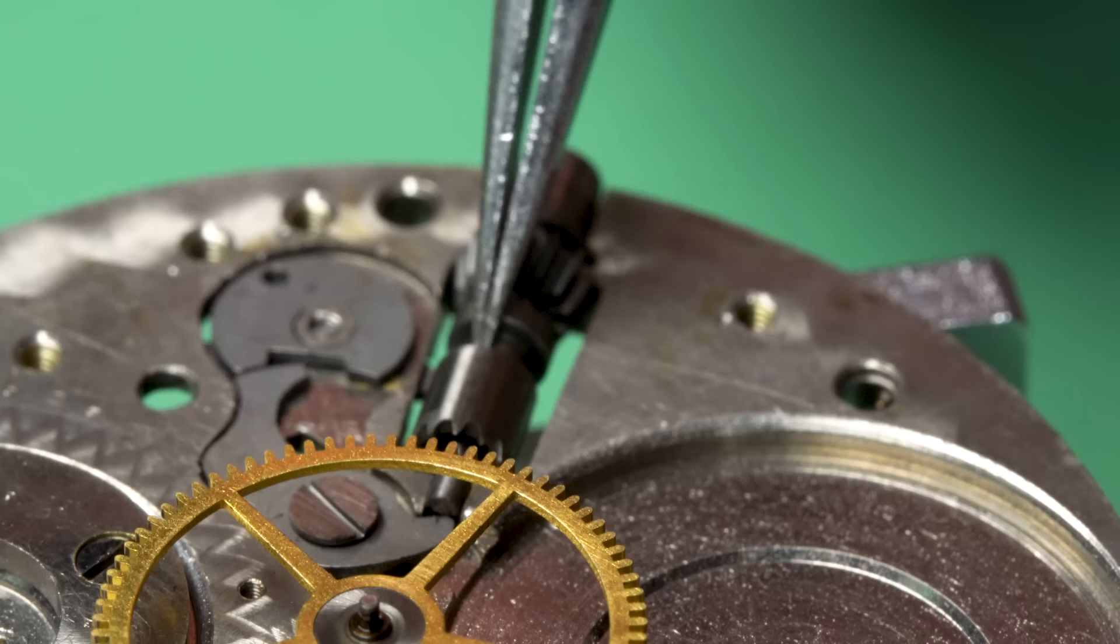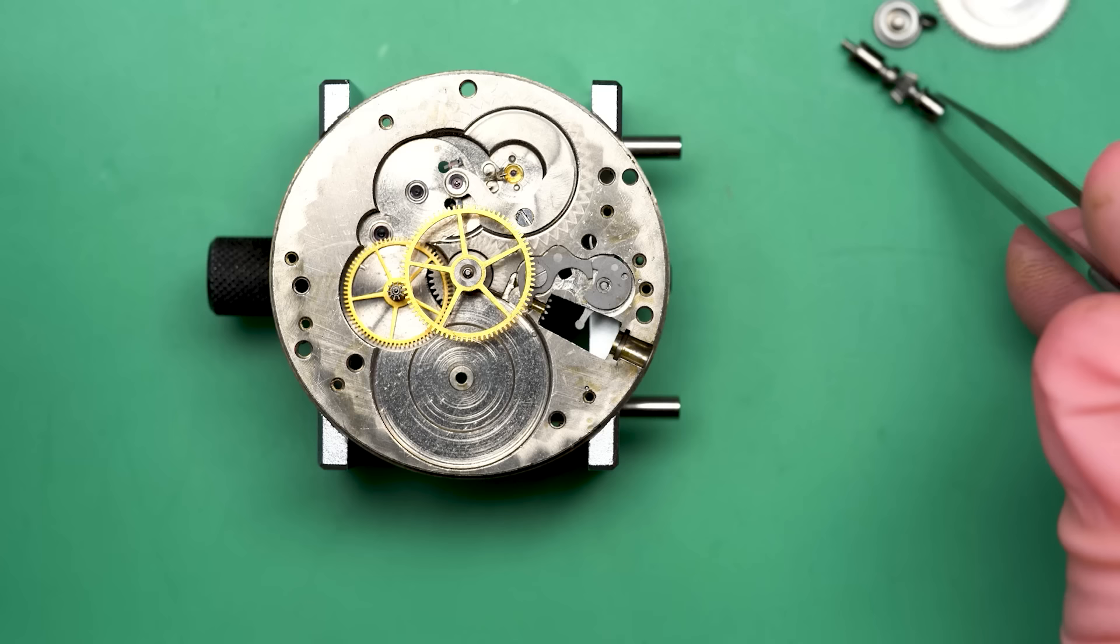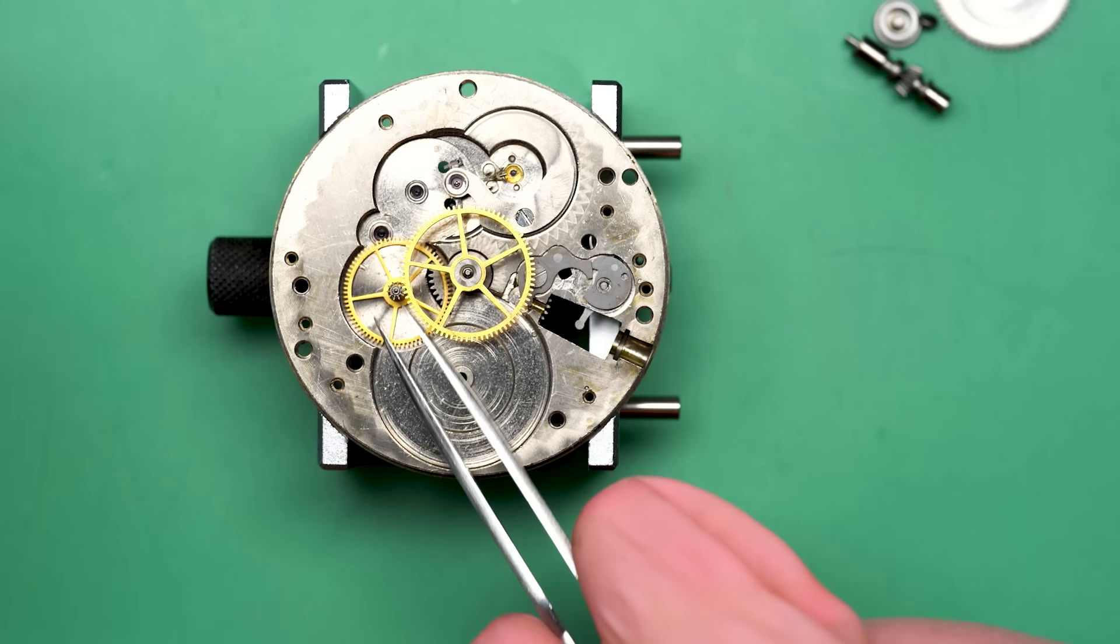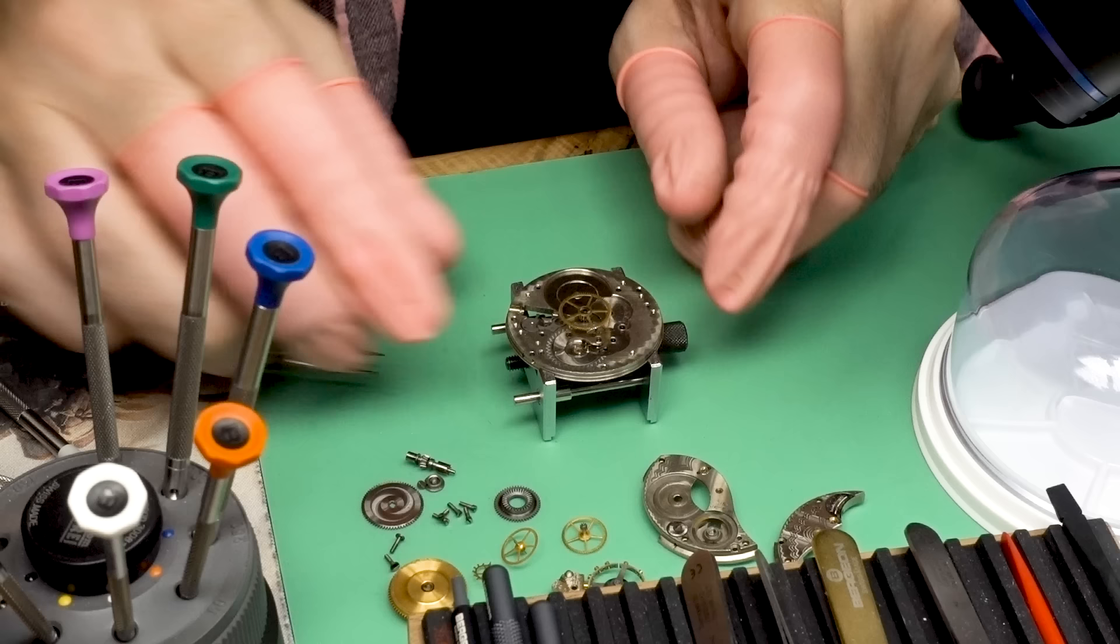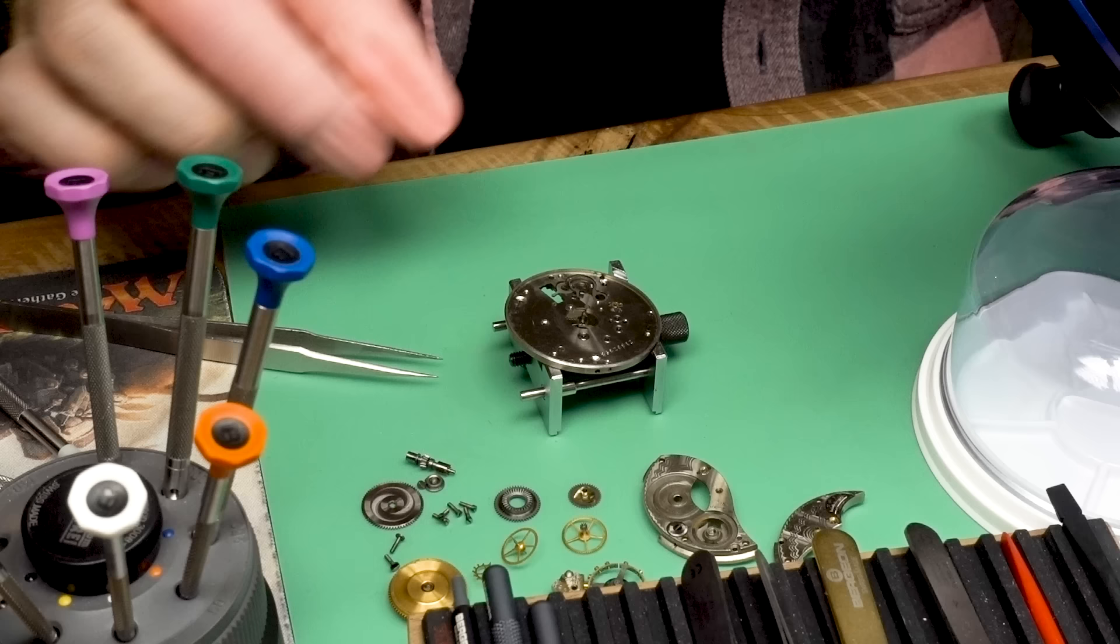And this is the Keyless Works, the winding stem. It's obviously a little bit of a different setup than to a wristwatch, where the stem and the crown are attached to each other in one piece. But you can see the similarities. If you've watched a bunch of my videos, you'll probably go, yeah, that looks kind of familiar.